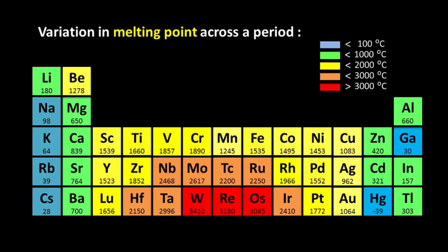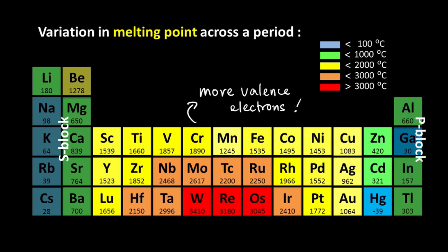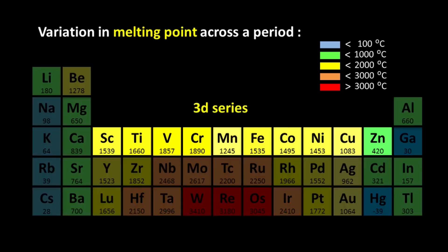This is very nicely reflected in the melting point data across the periodic table. Because the d-block elements have more valence electrons, remember even the d-electrons take part in bonding out here. So the melting point as you can see is higher than that of the s-block as well as the p-block. Let us now take a look at how the melting point varies within the d-block starting with the 3d series.